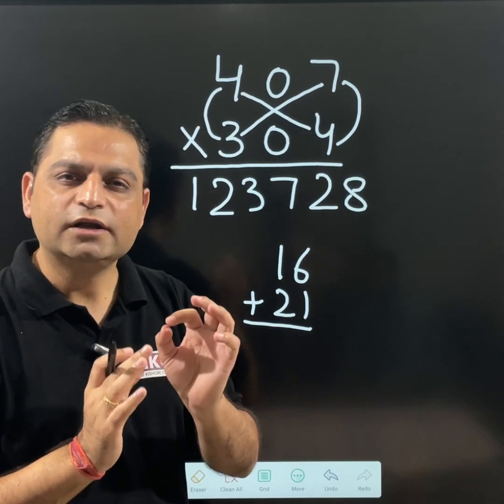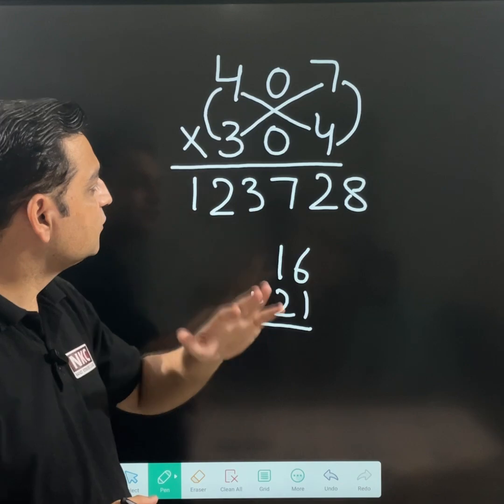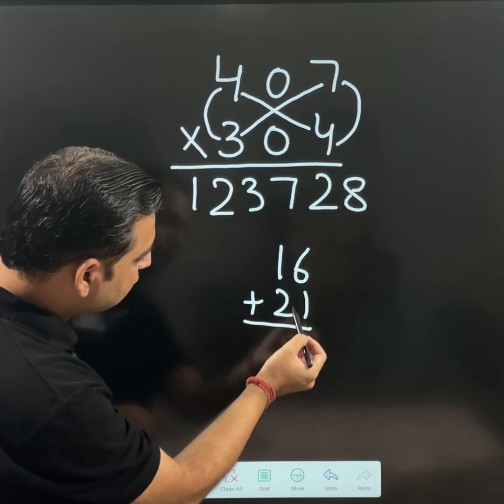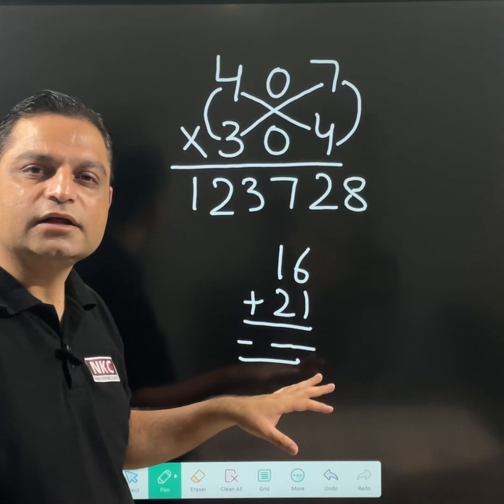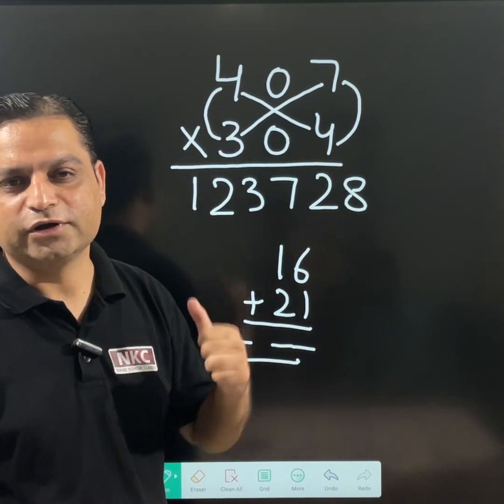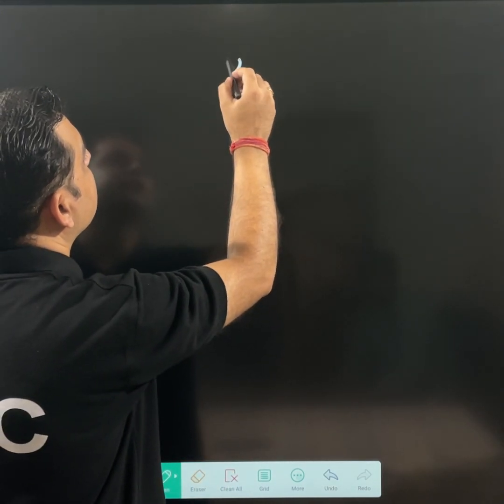Let us take one example. Sometimes it may happen—in fact, in a very rare case—that when you are adding them, you are getting a 3-digit number. If you are getting a 3-digit number, then what to do? This is what we are going to discuss now. Let us have a look.